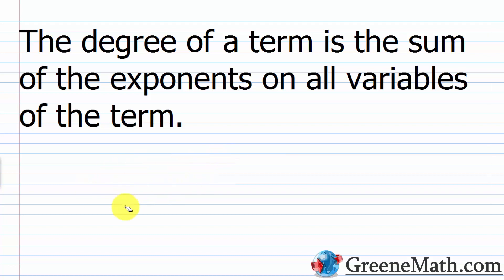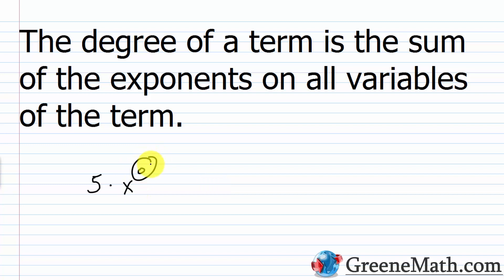What if I have just the number 5 — what's its degree? We use a little trick: raising a non-zero number to the power of 0 gives 1, so 5 times x to the power of 0 is just 5. So I can think of the constant 5 as having an exponent of 0 on its variable. Therefore, by definition, a constant term has a degree of 0. Anytime you run into a constant, you can say it has a degree of 0.